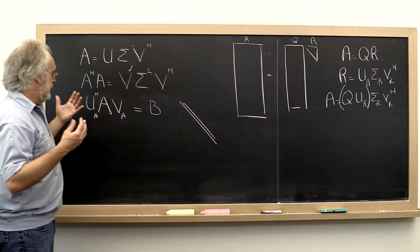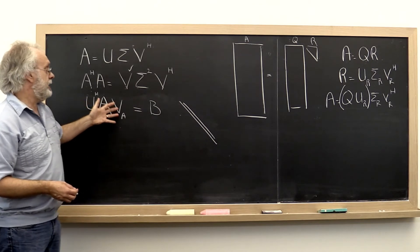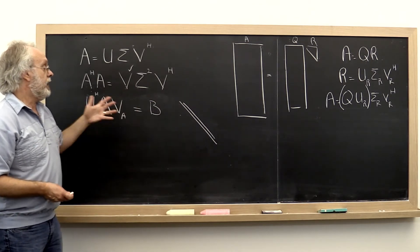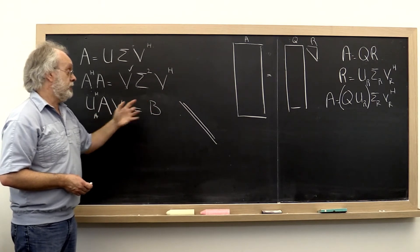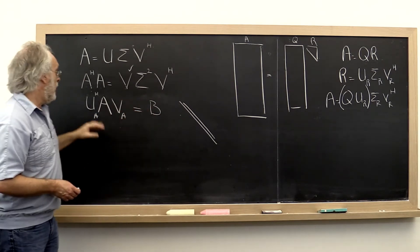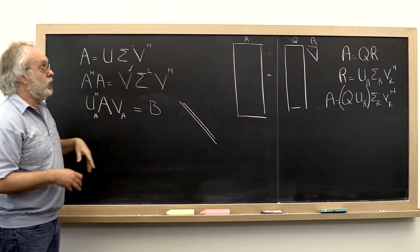Well, obviously once we have actually reduced our matrix A to bidiagonal form, we can then compute the singular value decomposition of our matrix B and we can then combine that with our matrices Ua and Va.